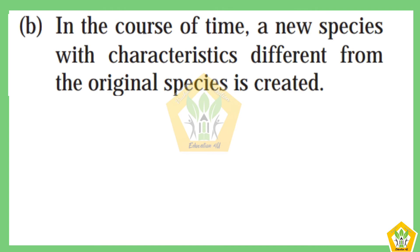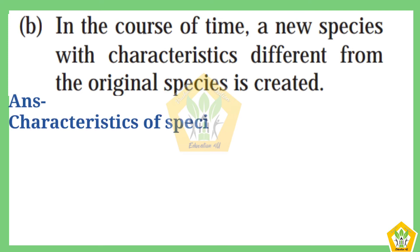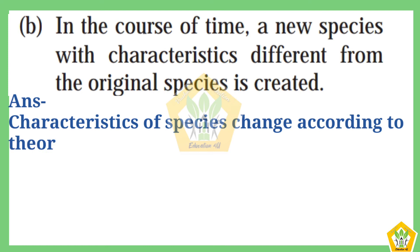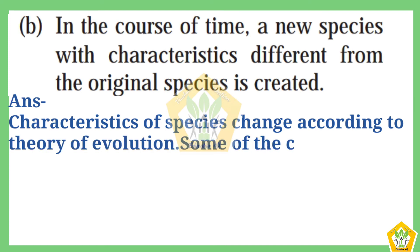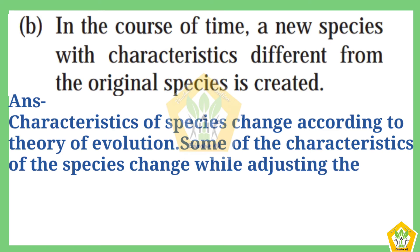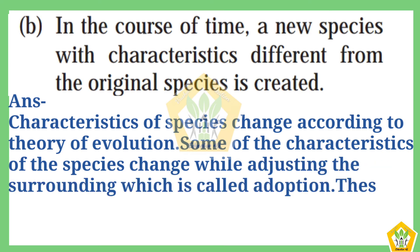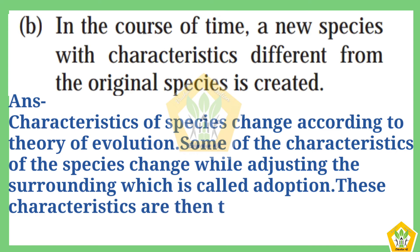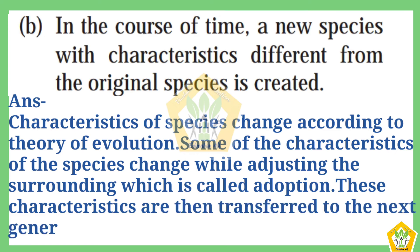B) In the course of time, a new species with characteristics different from the original species is created. Answer: Characteristics of species change according to the theory of evolution. Some characteristics change while adjusting to the surroundings — this is called adaptation. These characteristics are then transferred to the next generation.